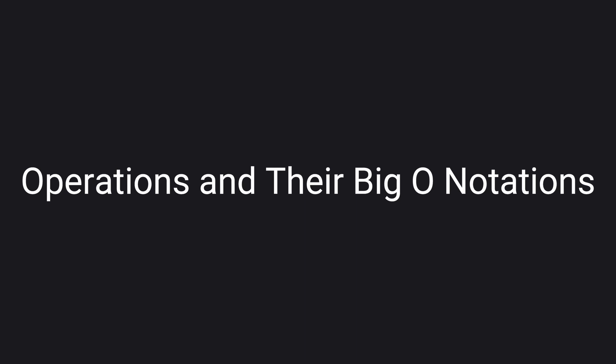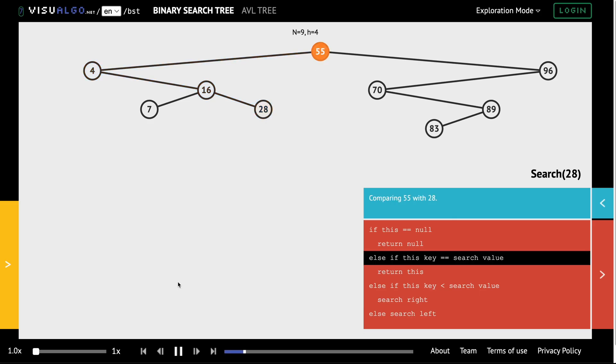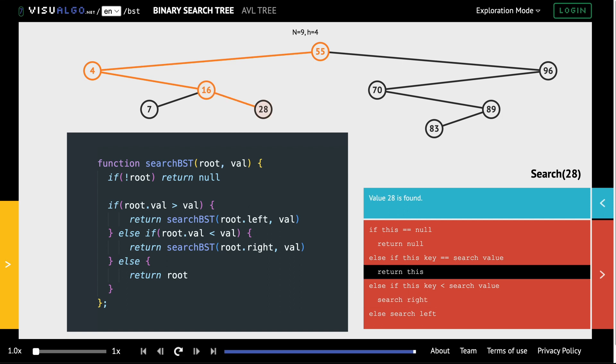Let's see the common operations and their Big O notations on binary search trees. The time complexity for a search operation is log n for balanced trees. Since we know that the tree is in a sorted order, we check if the target is less than our node value we go to the left, and if it's greater than our value we go to the right until we arrive at our target value.